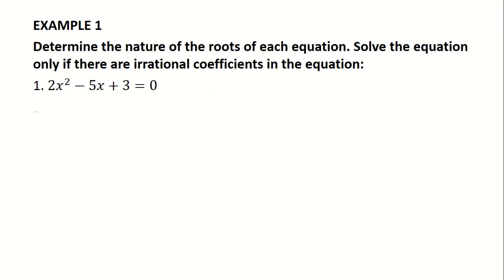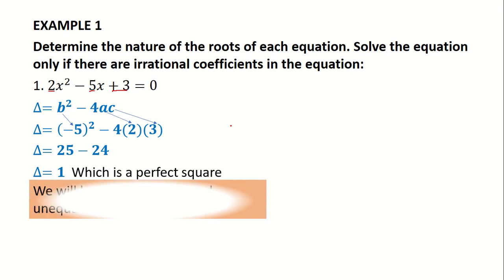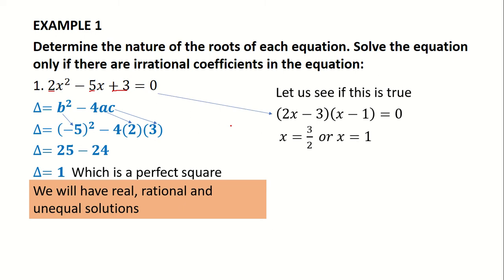Let us look at this example. We will first find the nature of the root by finding delta using the formula b squared minus 4ac. B is minus 5, A is 2, and C is 3. Substituting gives us 25 minus 24, which equals 1. Since 1 is a perfect square and greater than 0, we will have real, rational, and unequal solutions. Factorizing that equation confirms this — we get two x solutions that are rational, unequal, and real.